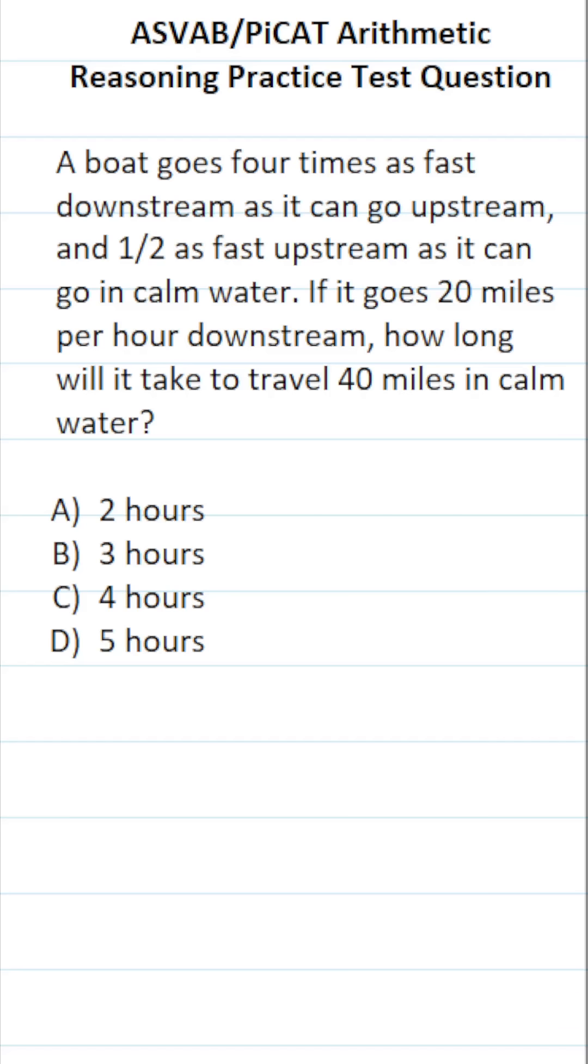This arithmetic reasoning practice test question for the ASVAB and PiCAT says: a boat goes four times as fast downstream as it can go upstream, and one half as fast upstream as it can go in calm water. If it goes 20 miles per hour downstream, how long will it take to travel 40 miles in calm water?